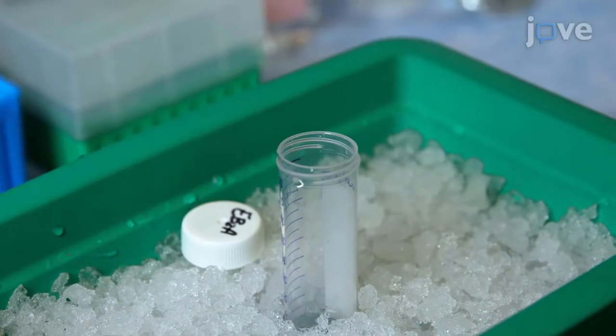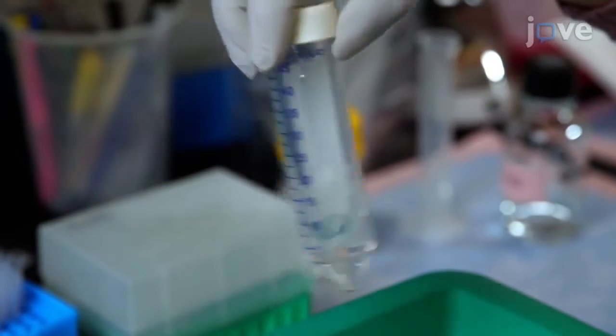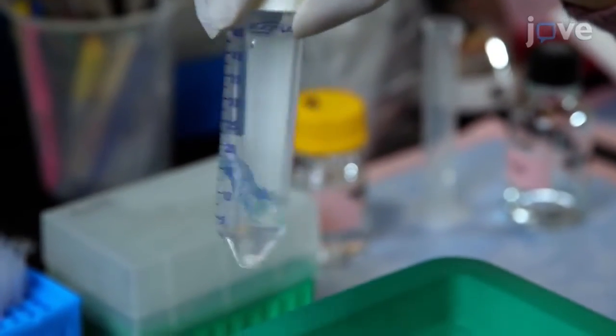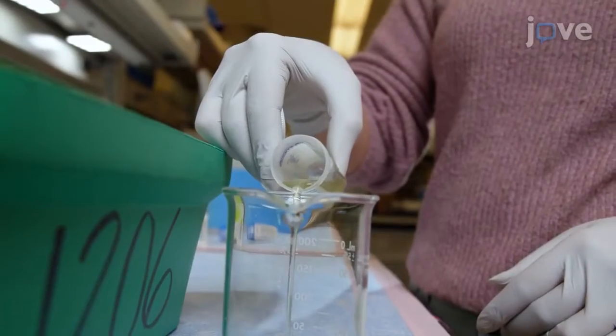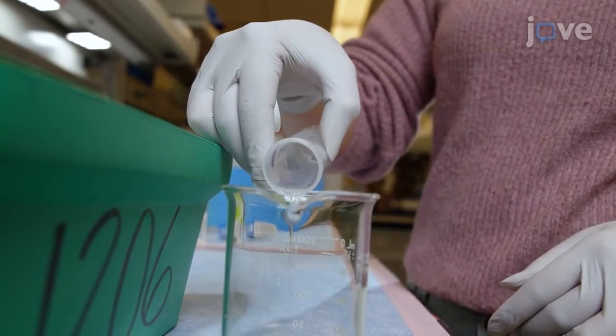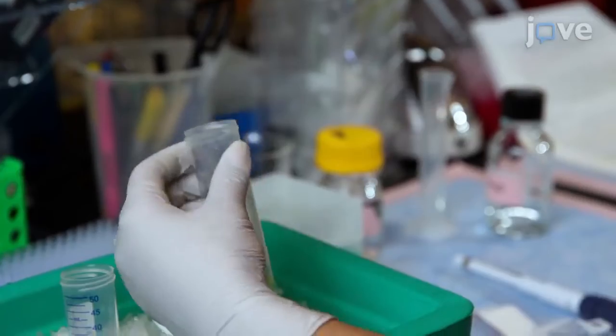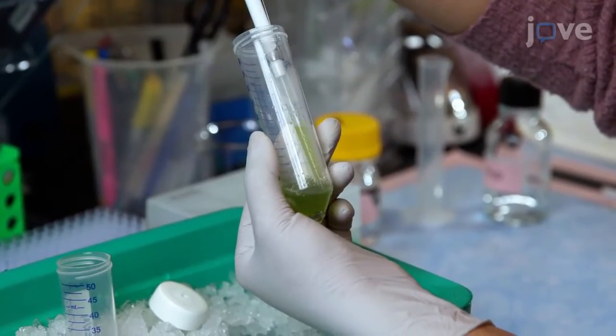Simultaneously prepare extraction buffer 2A by adding protease inhibitor to a final concentration of 0.4x. Discard the supernatant without disturbing the pellet. Then re-suspend the pellet in 5 milliliters of the prepared extraction buffer 2A.